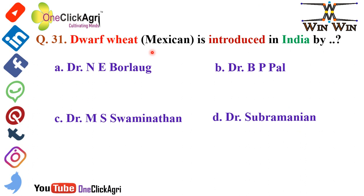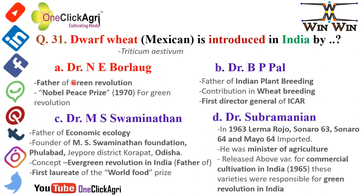Question number 31: The Dwarf wheat, that is Mexican wheat, was introduced in India by Dr. N.E. Borlaug. He is the father of the Green Revolution in the world and he got the Nobel Peace Prize in 1970 for the Green Revolution.